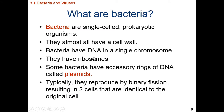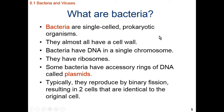Our bacteria do have ribosomes. Ribosomes are a tiny organelle that we use to make proteins, and these ribosomes are not membrane-bound. So when I say bacteria do not have membrane-bound organelles, they can have ribosomes, because ribosomes don't have a membrane encapsulating them. Every once in a while, our bacteria are going to have a little tiny piece of accessory DNA called a plasmid. You can think of the chromosome as a giant loop of DNA, and the plasmid is just a little tiny loop of DNA.